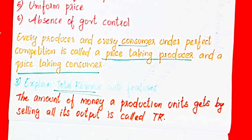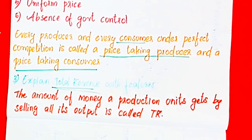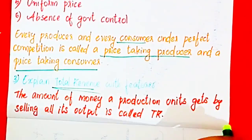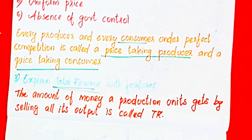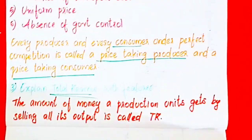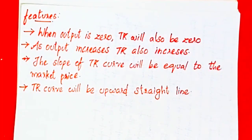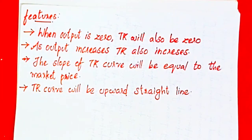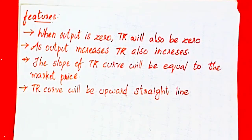What are the features of total revenue? When you have zero output, the total revenue is zero.